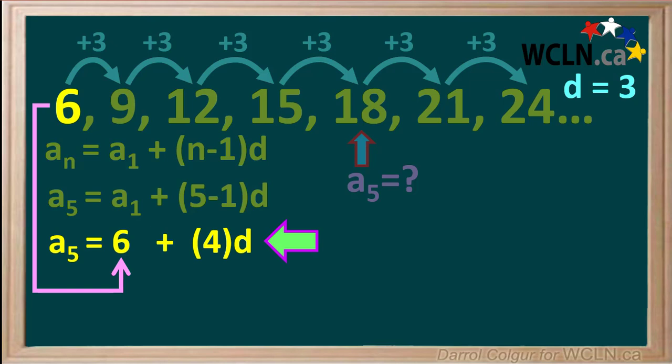The value for term a1 is 6, and 5 minus 1 equals 4. So we have a5 equals 6 plus 4d.